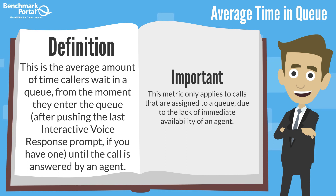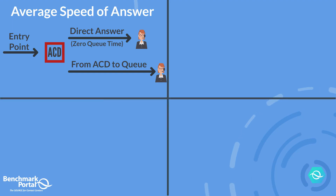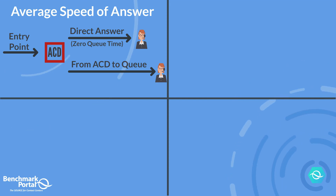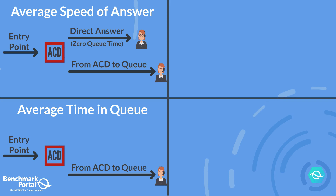Certain exclusions apply to both ASA and queue time. Neither of these include time spent routing callers or time callers spent interacting with the IVR. They also do not include abandoned calls, as these never reach an agent. This slide shows the difference in graphical terms. ASA includes calls that slip right through to a waiting agent without ever entering into the queue system, while average time in queue includes only those calls which do end up in a queue.